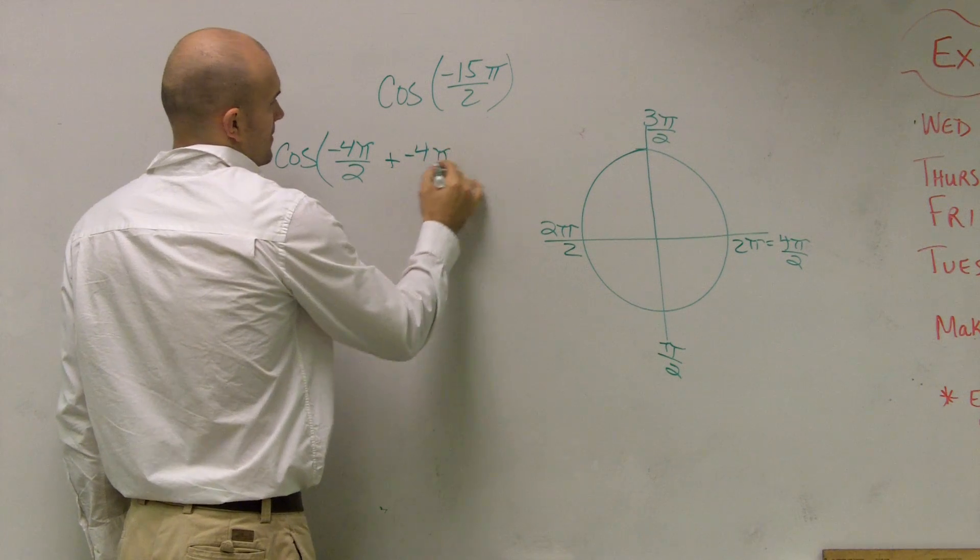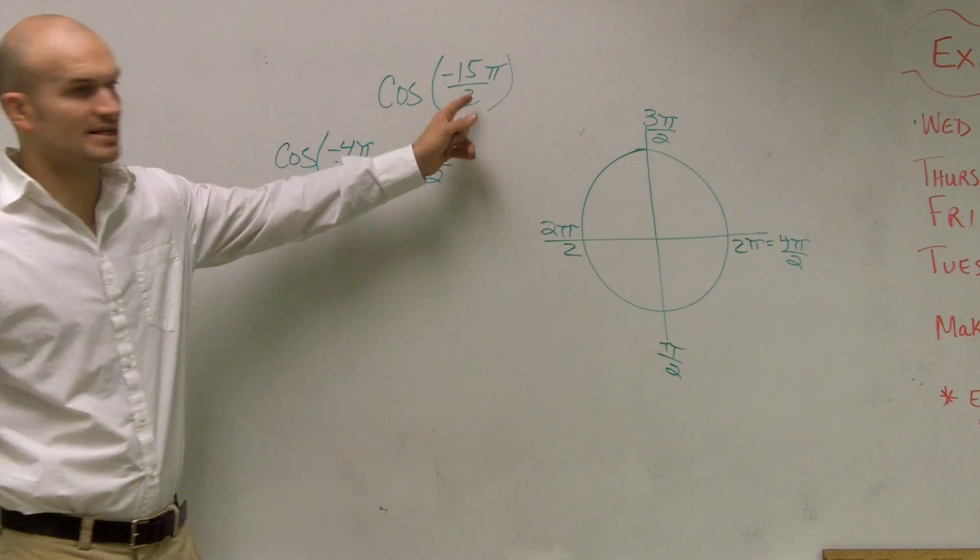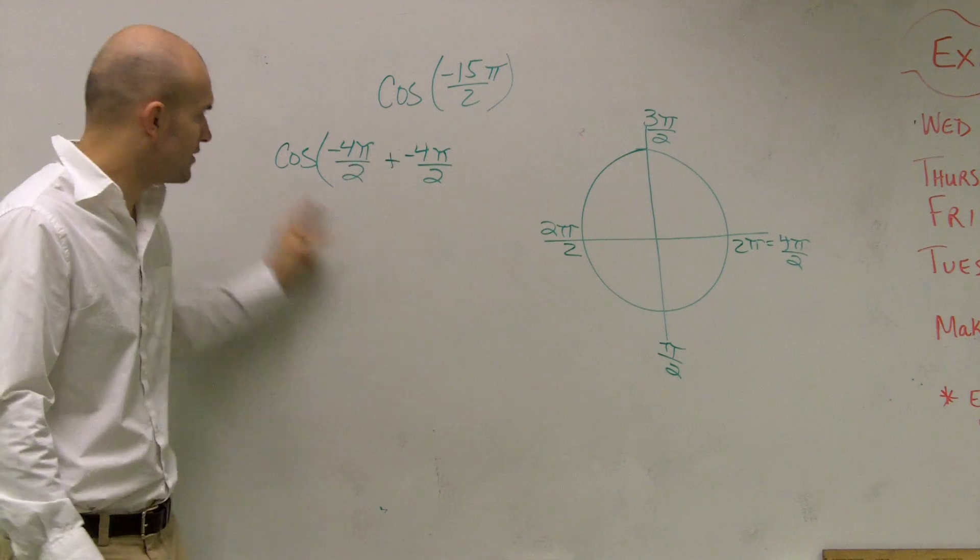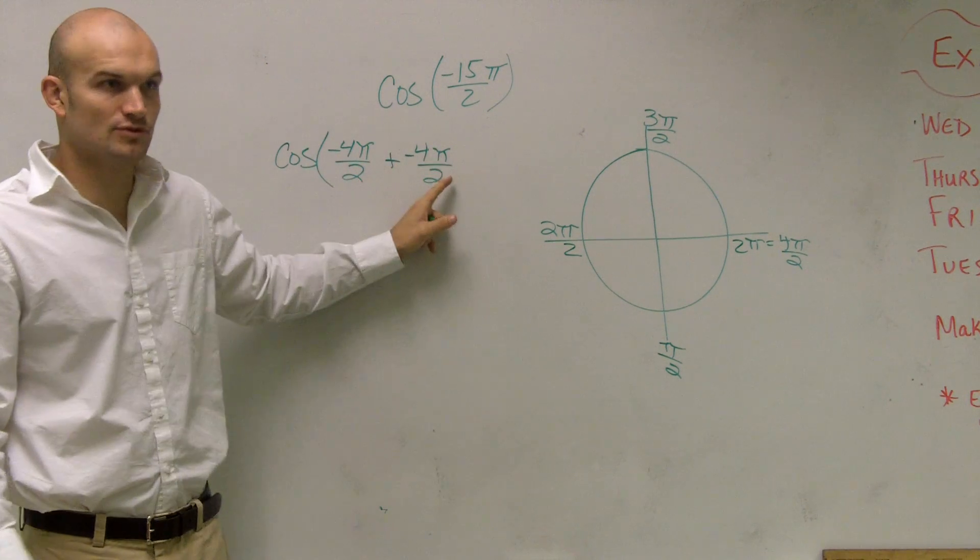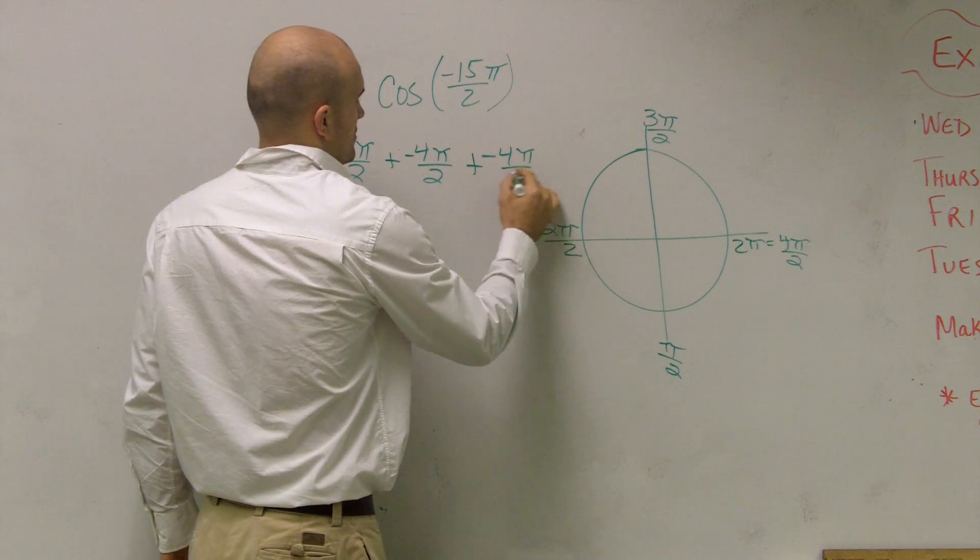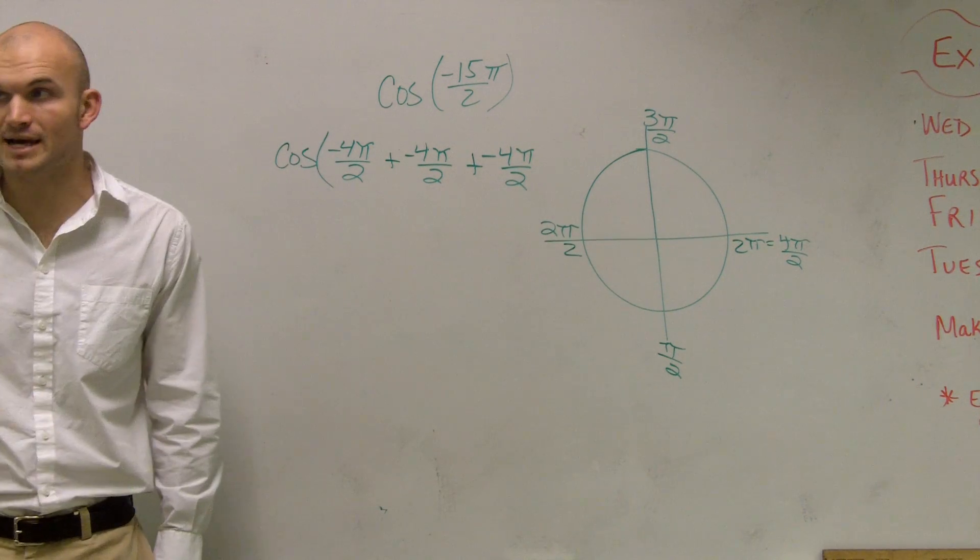And then we can say plus. We can go around again. These two added up, does it get me to 15 yet? No. But again, what am I doing? Went around the circle once, went around the circle twice. Plus. Now I go around the circle three times.